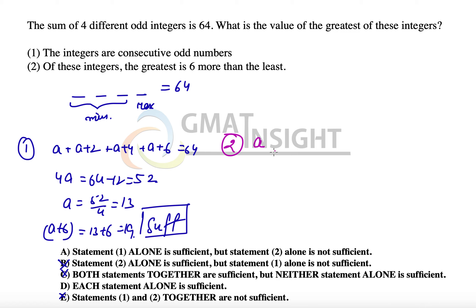Because if we take the smallest number a and leaving the two places open, the largest number has to be a plus 6. That means the other numbers must be a plus 2 and a plus 4 only, because they all must be odd. And their sum is equal to 64. So once again we get a plus 6, the largest of them, equal to 19.